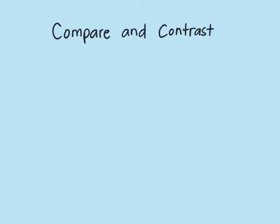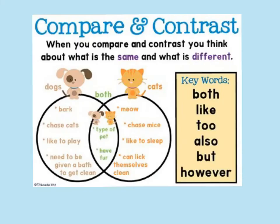The informational text we just read compared and contrasted different animals in the same animal family. When you compare and contrast, you think about what is the same and what is different. You might use some keywords like both, like, also, but, and however.